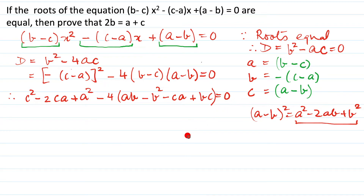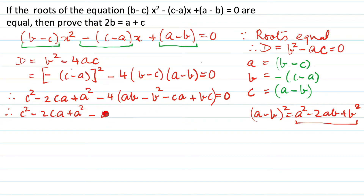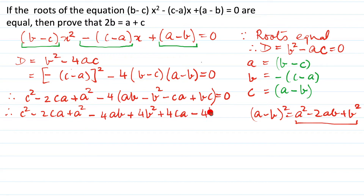Next we open this bracket — it is a simple step. So minus 4 times the bracket gives us: minus 4ab, and minus into minus gives plus 4b squared, and plus 4ca, and minus 4bc. And that is equal to 0.